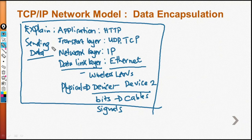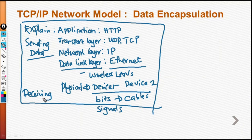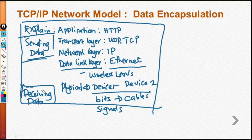To another device in the network. If you want to start from the physical layer, you will assume the device is receiving data from the network. What determines where you start is the process — is it a sending process or a receiving process? This is what makes it easier for you to understand.